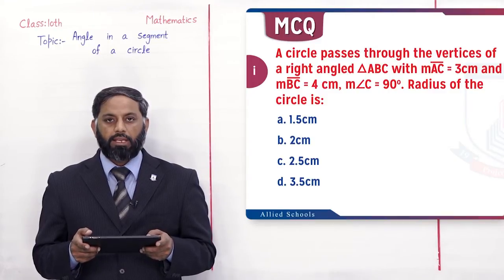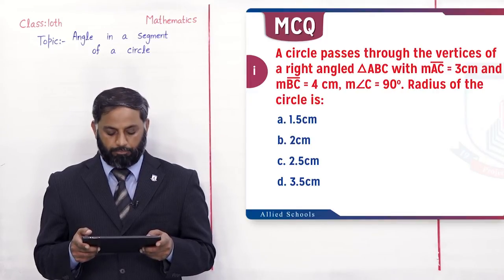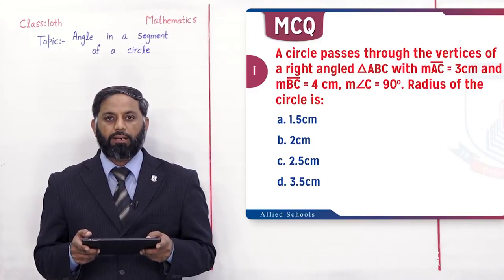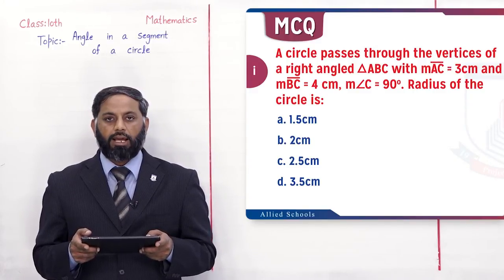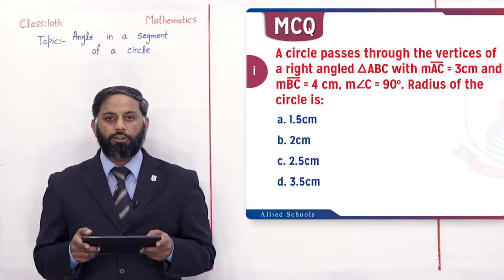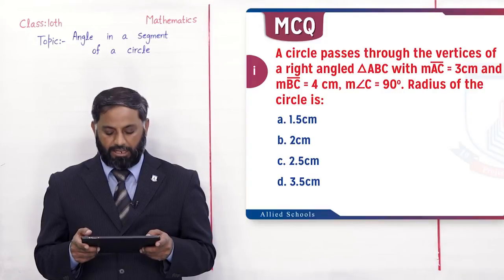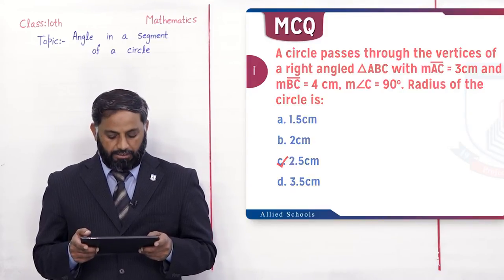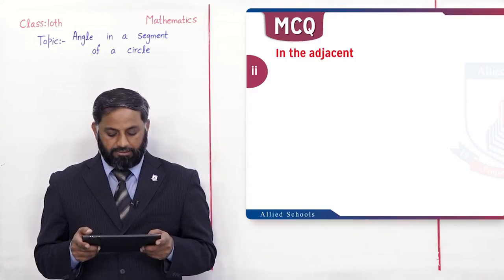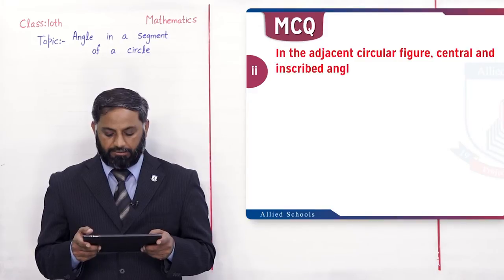اس formula میں perpendicular اور base کی value put کریں تو 3² + 4²، ان کے squares کا sum کریں تو 25 آ جائے گا۔ Hypotenuse کی value find کرنے کے لیے square root لیں تو hypotenuse = 5 cm۔ Radius پوچھا گیا ہے تو radius = diameter/2 = 5/2 = 2.5 cm۔ تو اس کی C option correct ہوگی۔